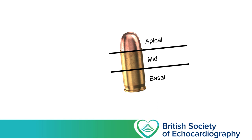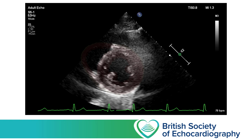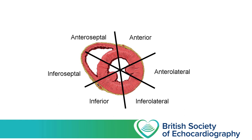In addition to dividing the LV into basal, mid, and apical segments, we use further divisions at each level, dividing the LV into anterior and inferior portions, and describing the relationship to the intraventricular septum. Taking this parasternal short axis view at the mid level and drawing lines through the centre of the LV cavity, we can describe the LV as having an anterior half with antero-septal, anterior, and antero-lateral segments, and an inferior half with infero-septal, inferior, and infero-lateral segments. These divisions are largely arbitrary but allow us to quickly communicate where abnormalities have been detected.